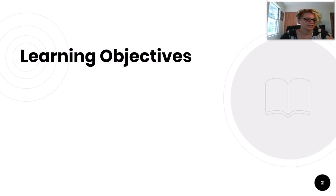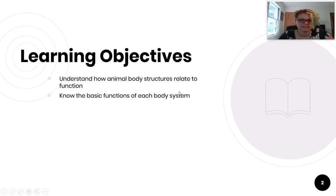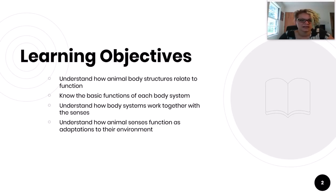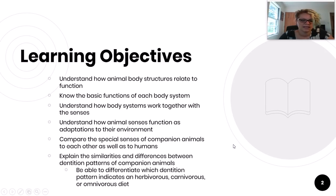So we've reached the end of our lesson, and as a review, let's go through the learning objectives one more time. Make sure you can understand how animal body structures relate to function. Know the basic functions of each body system. Understand how body systems work together with the senses. Understand how animal senses function as adaptations to their environment. Compare the special senses of companion animals to each other as well as to humans. And explain the similarities and differences between dentition patterns of companion animals. You need to be able to differentiate which dentition pattern indicates an herbivorous, carnivorous, or omnivorous diet.